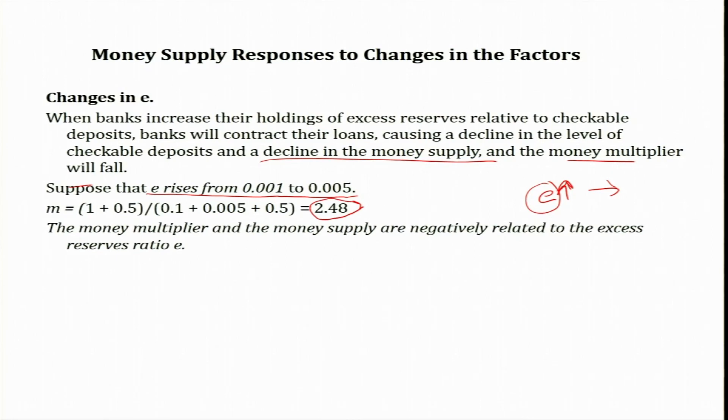To summarize, in this session we have discussed how to derive the money multiplier formula and the factors affecting it. In the next session, we are going to expand on these topics by discussing monetary policy, the tools of monetary policy, and target variables. Thank you so much for watching this video, and see you in the next session.